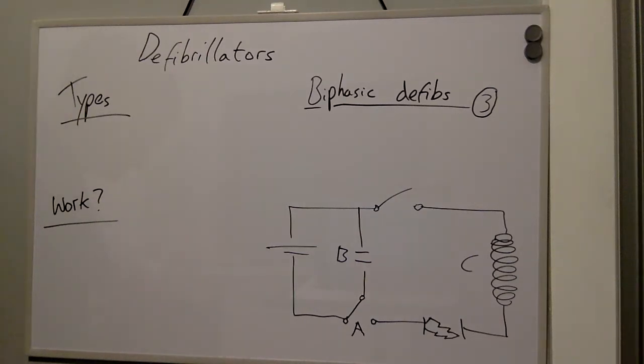Internal defibrillators are known as Implanted Cardioverting Defibrillators or ICDs. External defibrillators can be of two types: monophasic or biphasic.